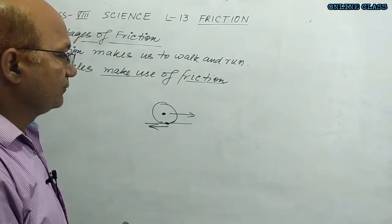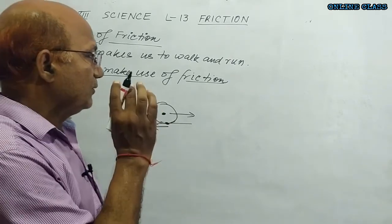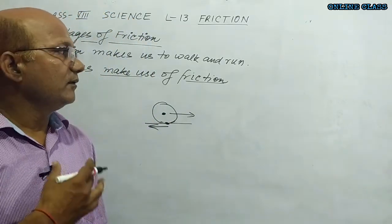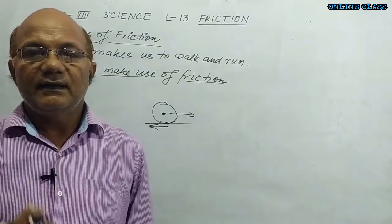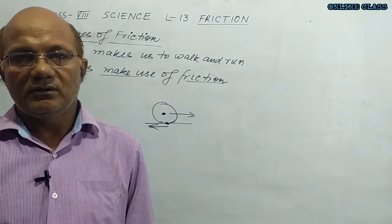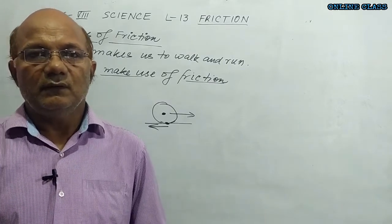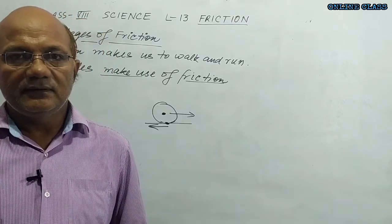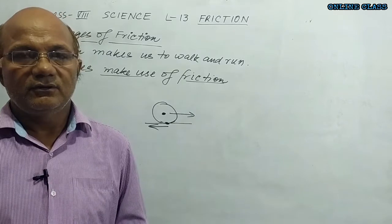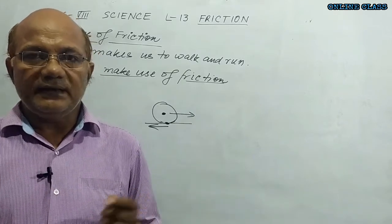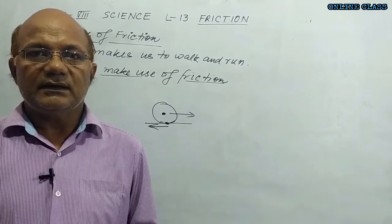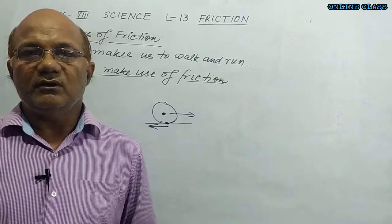Because of friction, a body moves in the forward direction and it can run on the road. So all types of vehicles can run on the road only because of friction. Friction is very important in the direction of motion of bodies.